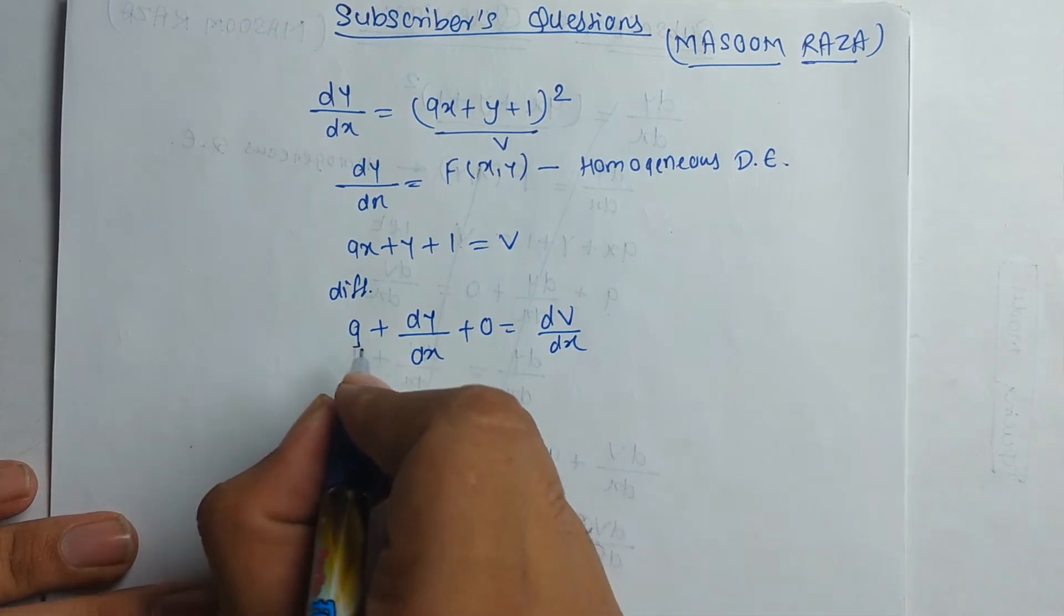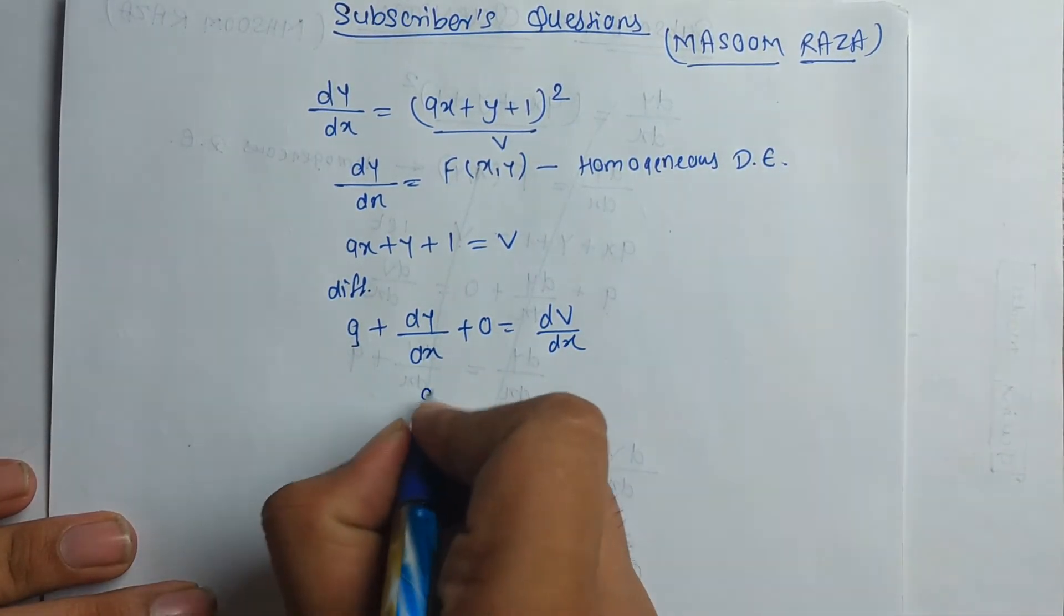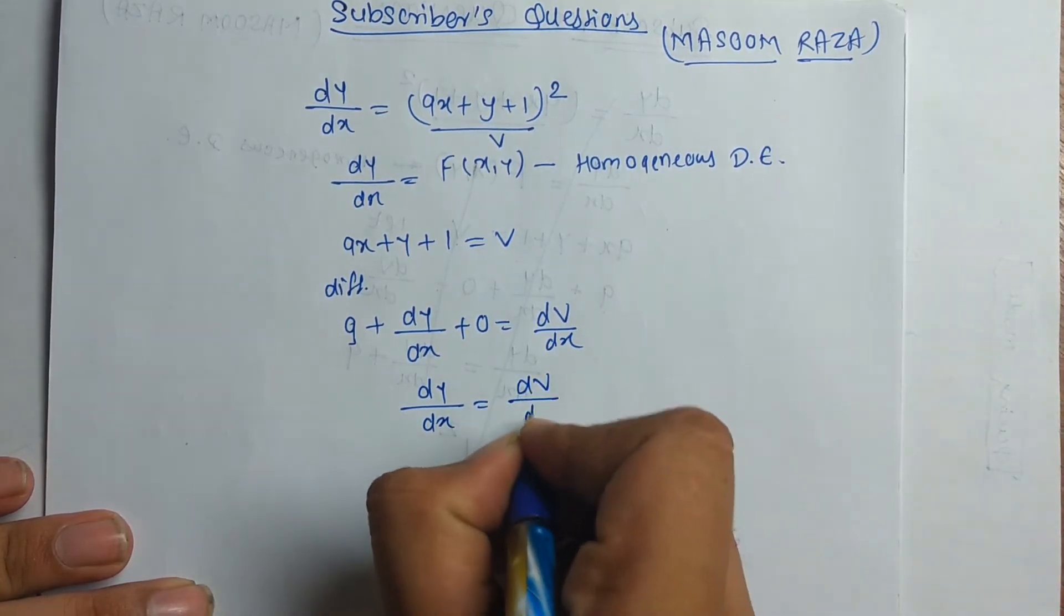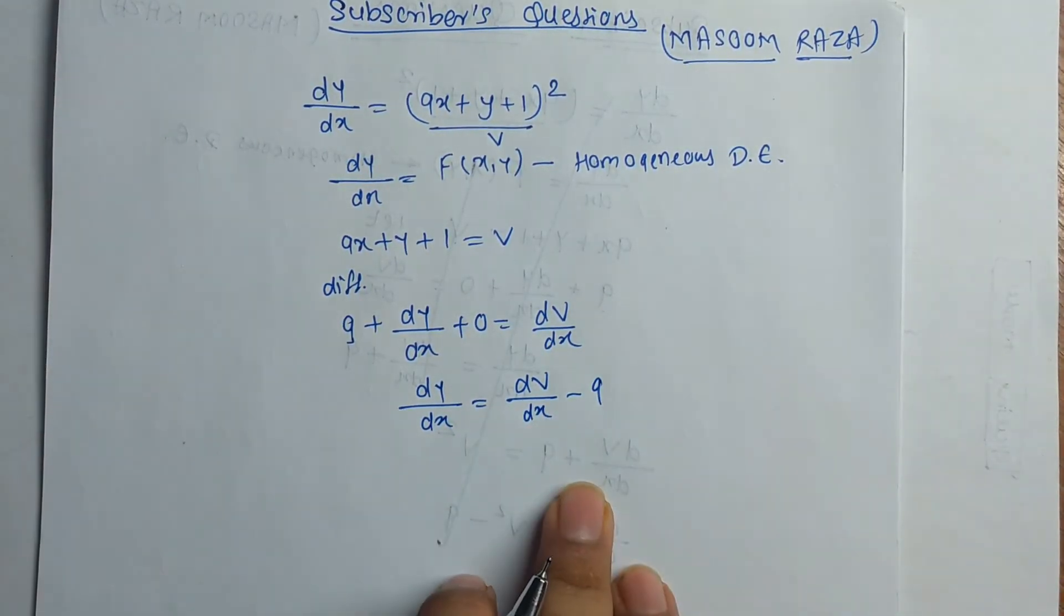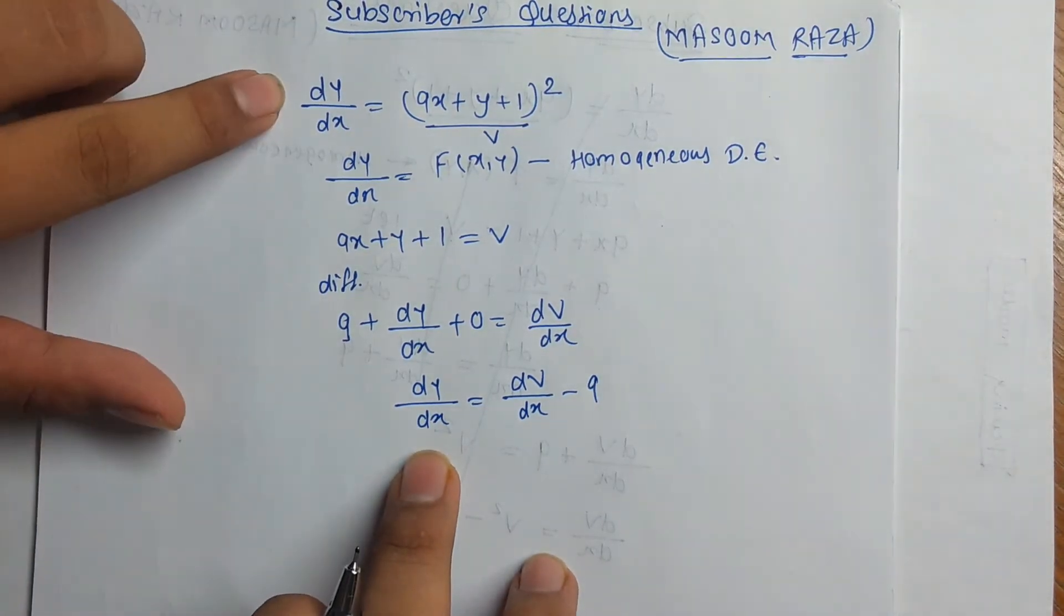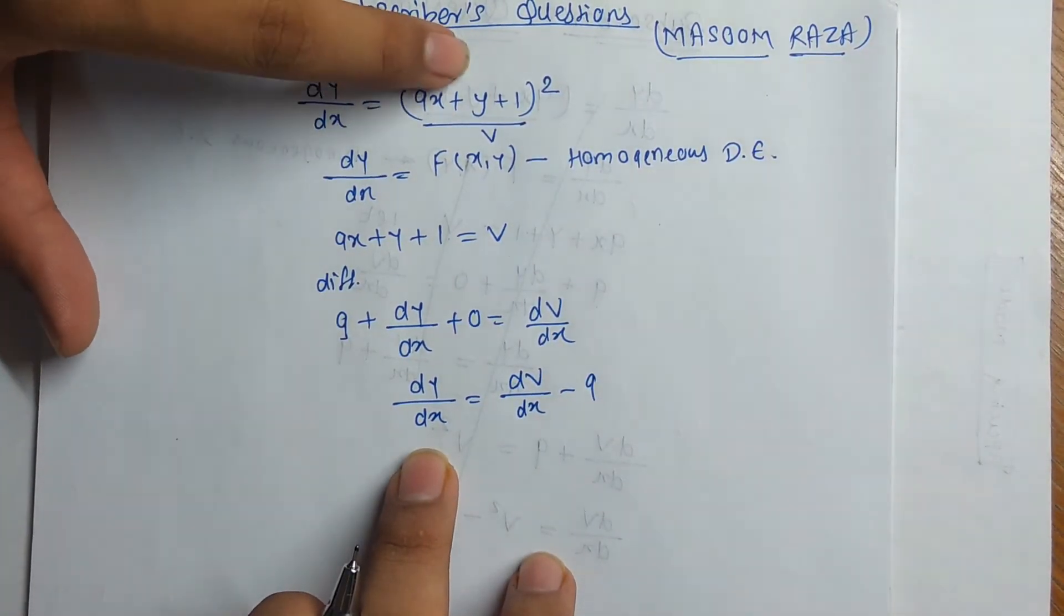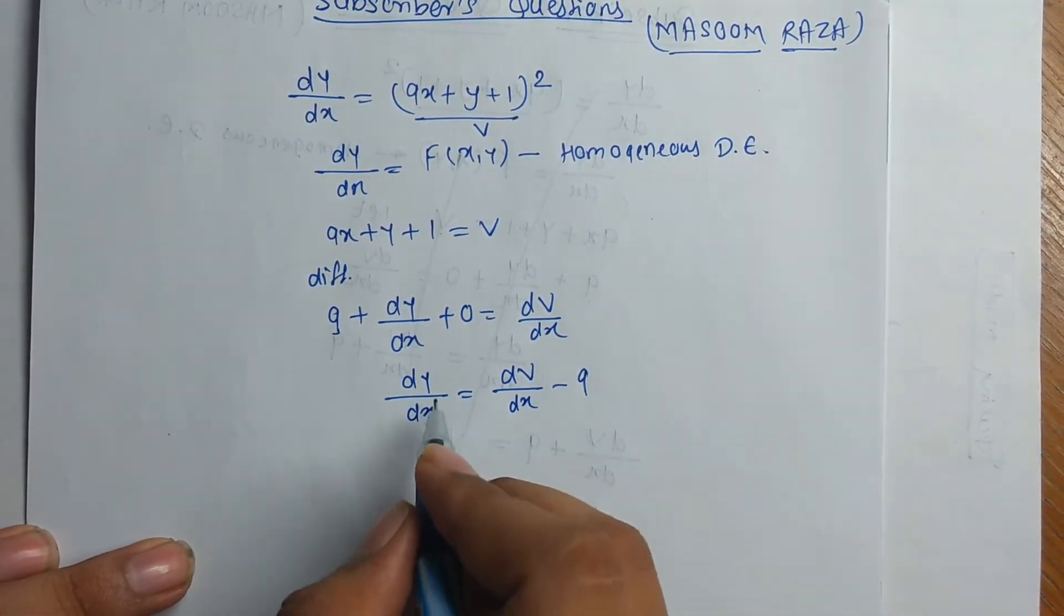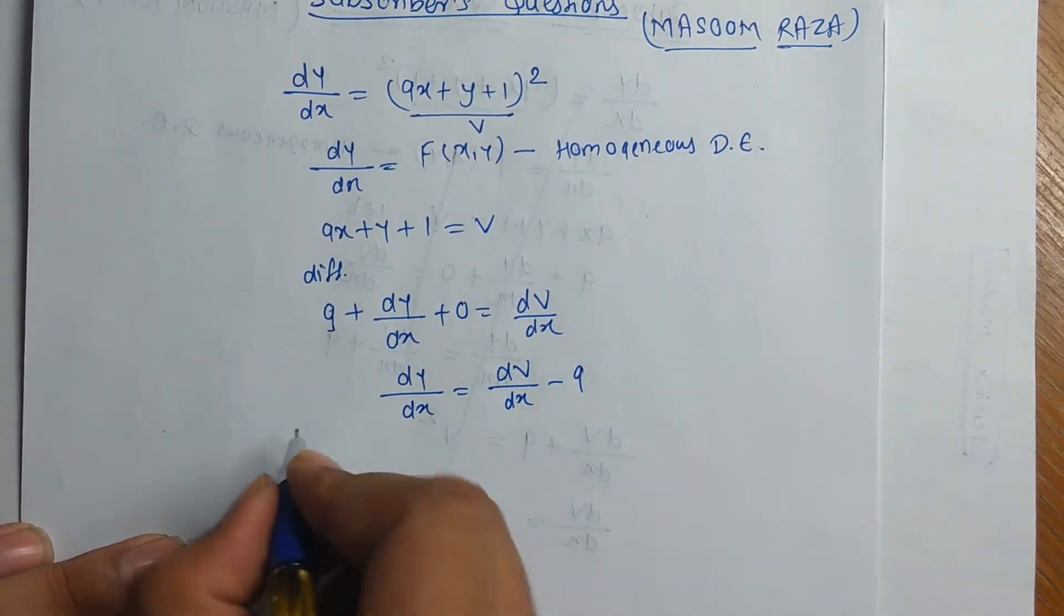Now, we transfer this 9 on the right-hand side. That gives us dy by dx equal to dv by dx minus 9. Now we know the value of dy by dx in place of this. We put 9x plus y plus 1 as a v and then square.